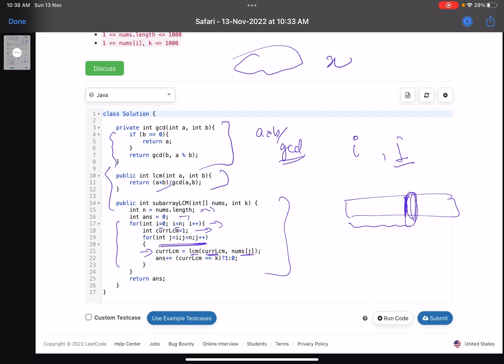Consider this: suppose for some numbers the lowest common multiple is x, and I get a new number a. If I find the LCM of x and a, that means I've found the LCM of all the elements - these elements and this one.